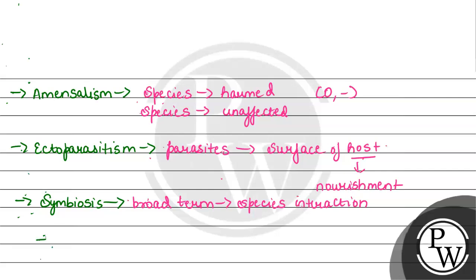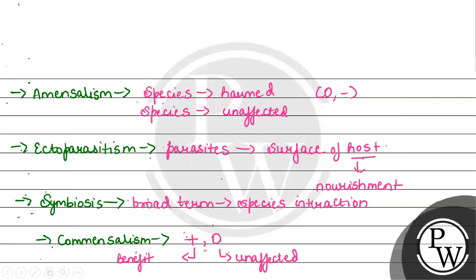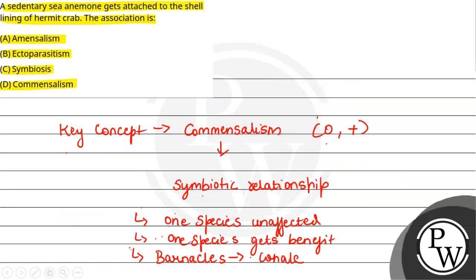Option number D हमें given है which is commensalism. Commensalism में एक species जो है उनको profit हो रहा है, one species is getting profit and other is unaffected. Generally अगर हम देखें hermit crab और sea anemone के case में तो जो हमारे hermit crab होता है उसको कोई फरक नहीं पड़ता, sedentary sea anemones जो होते हैं वो उसके उपर रहते हैं and mobility provide होती है. So therefore the correct option is option number D, commensalism. Hope you understood it well. Best of luck.